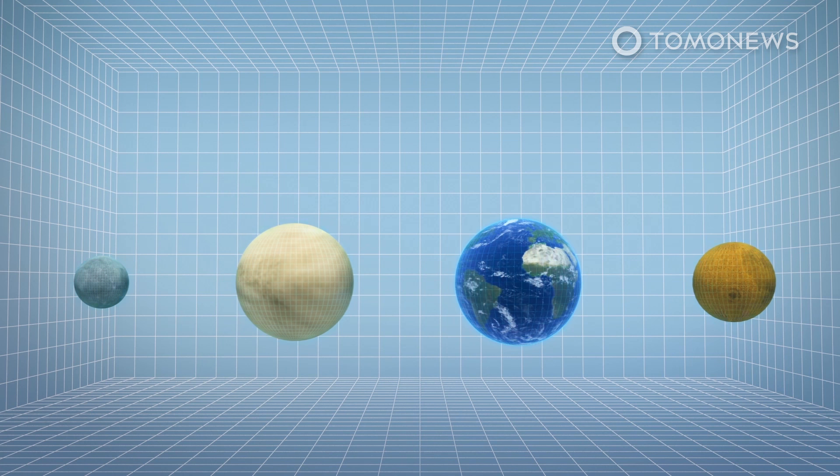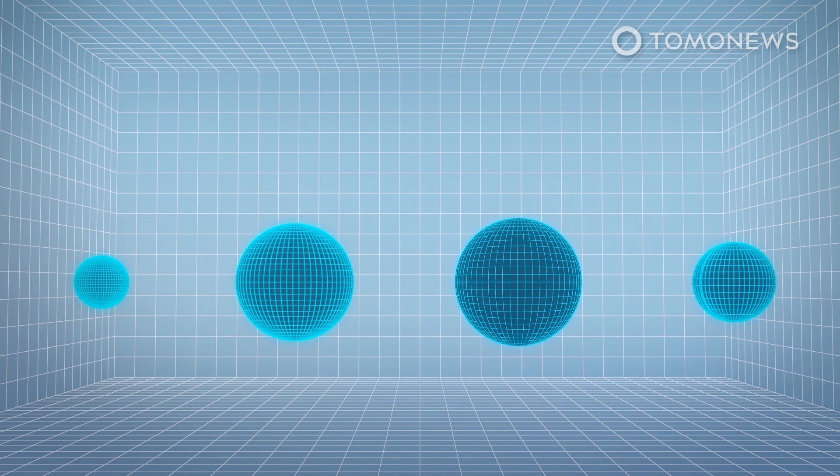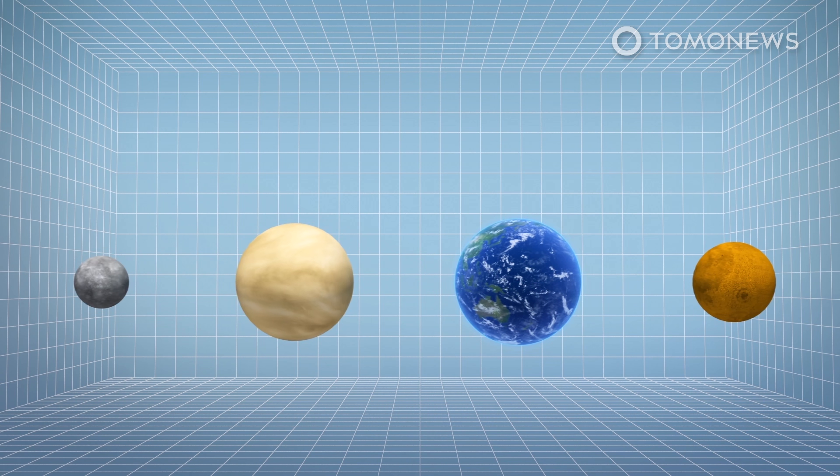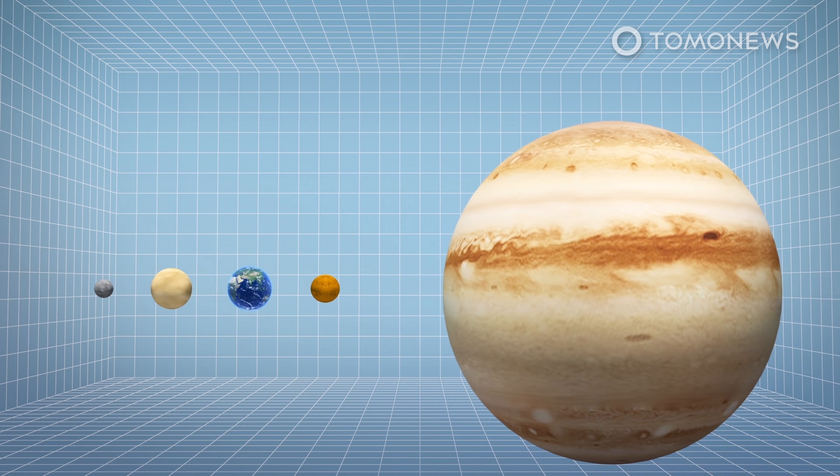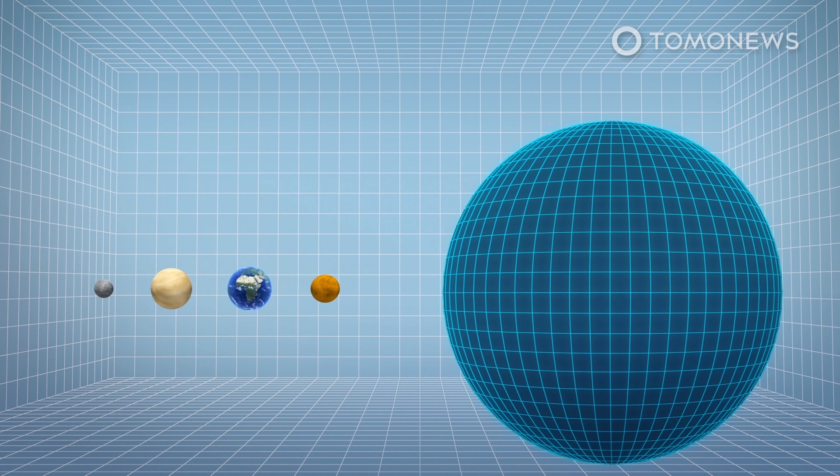Citing the researchers, University of Colorado's news release says that rocky planets in the sunward side of the divide are poor in carbon and other organic materials. The opposite is true for the gas planets beyond the divide, such as Jupiter, which is rich in carbon.